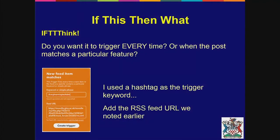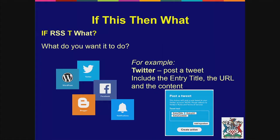Give If This Then That the RSS feed URL you copied earlier and that's your trigger done. If This Then That will then say: something's happened — what do you want it to do? With If This Then That, you can actually set up multiple actions. You don't just have to have one action for a trigger. Something happens: make this happen, make something else happen, make a third thing happen, a fourth thing — you can have as many as you want.